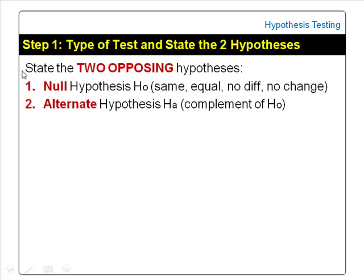Step 1 of hypothesis testing: we state the two opposing hypotheses. They are the null hypothesis, denoted by H-O, and the alternate hypothesis, denoted by H-A.